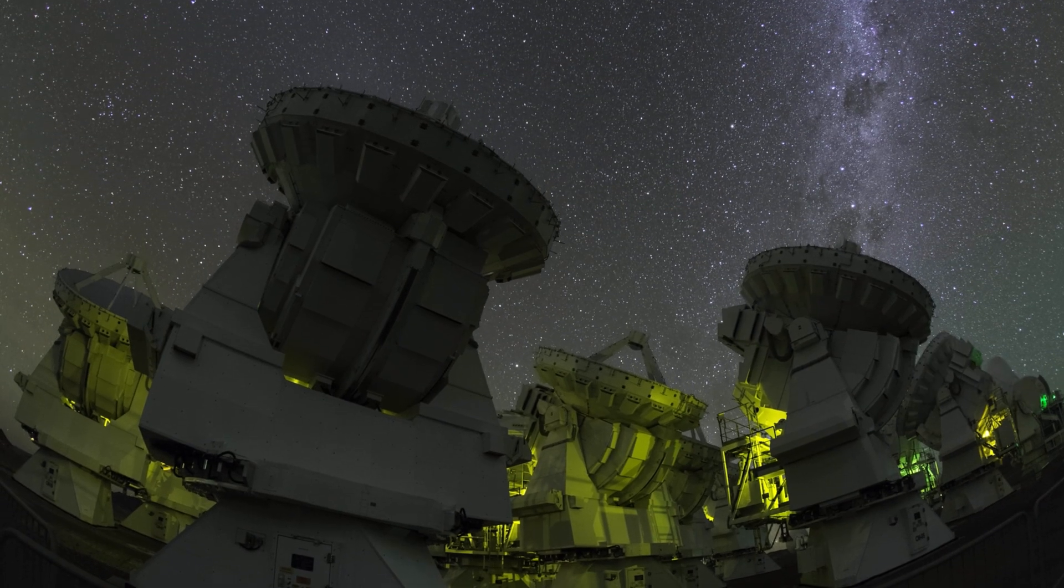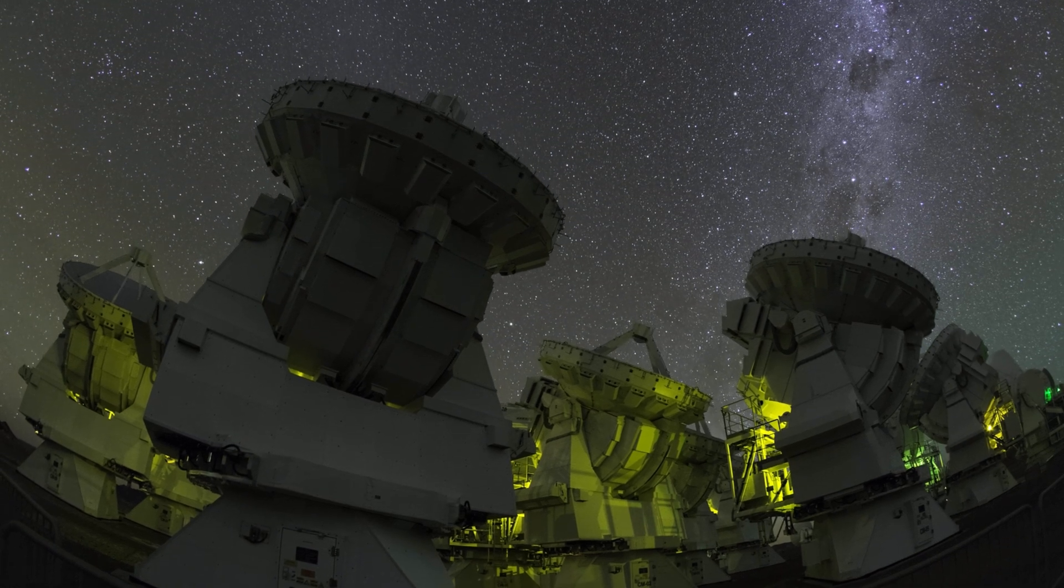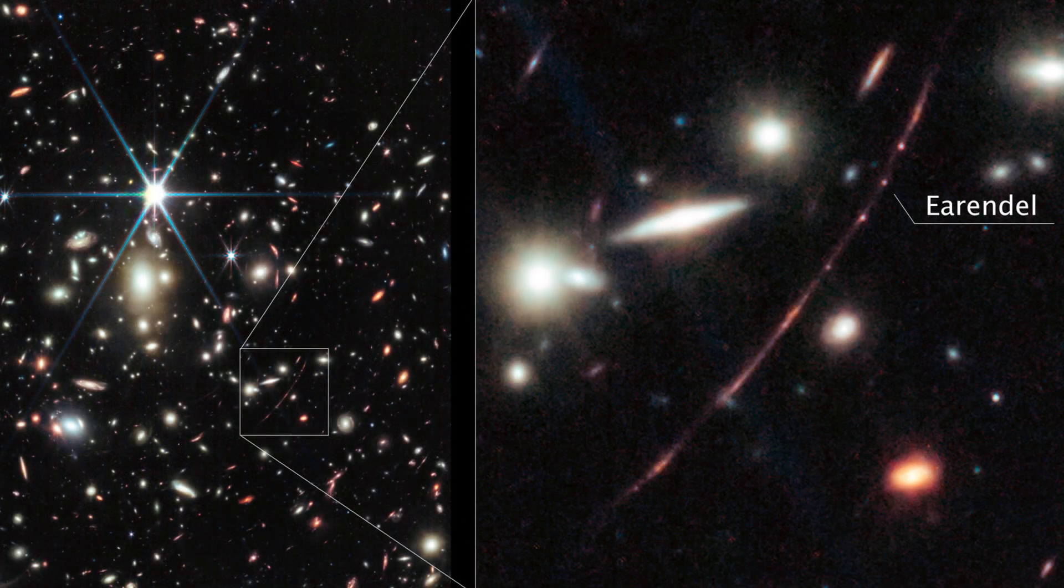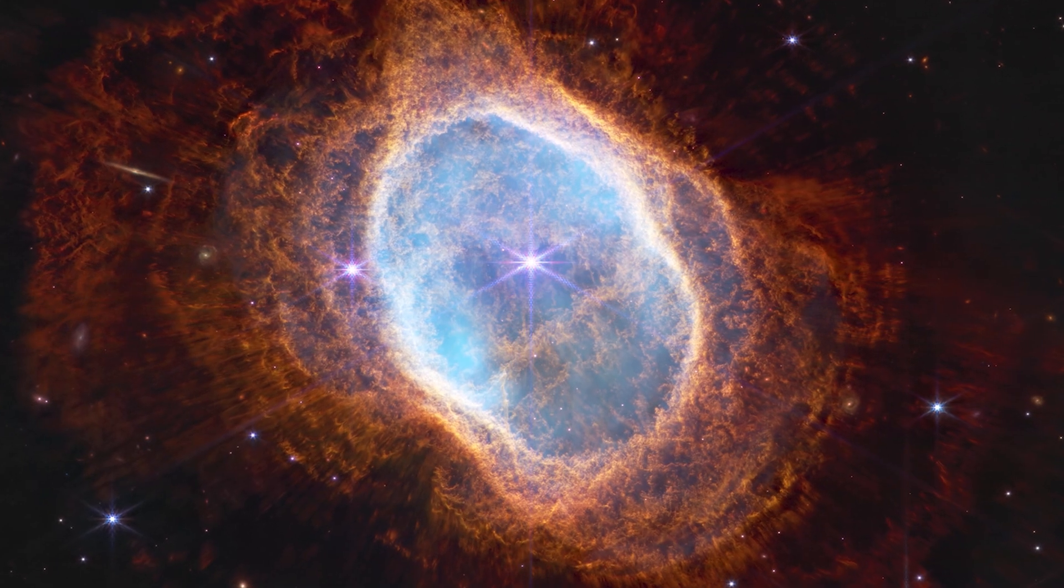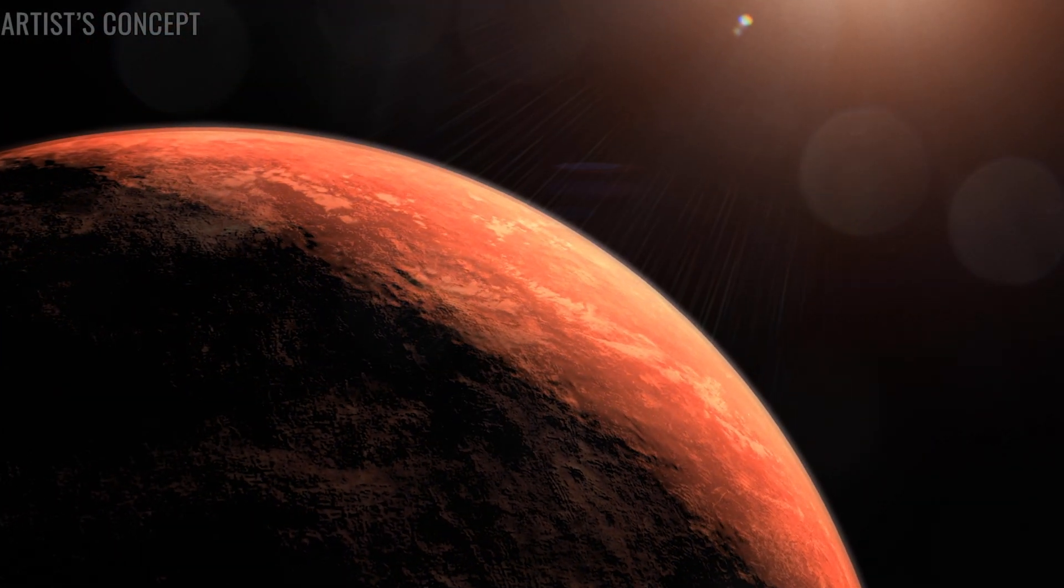Which can unveil fine details invisible to even the largest ground-based telescopes. Webb's infrared vision lets it study the first stars, the dusty cocoons of stellar nurseries, and the chemical fingerprints of exoplanet atmospheres: water vapor, carbon dioxide, hazes, and more.